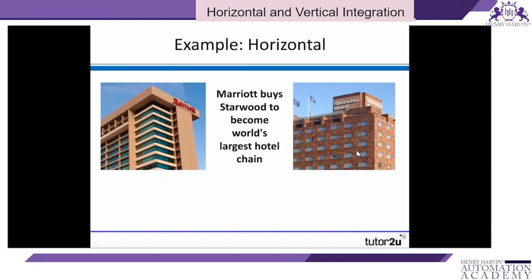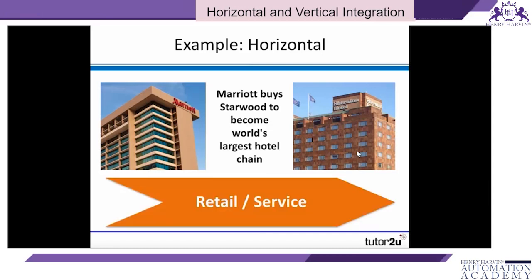Finally, here's an example of horizontal integration. Marriott, one of the world's largest hotel businesses, bought Starwood Hotels — which includes brands such as Sheraton Hotels. As a result of that takeover, finally approved in 2016, Marriott became the world's largest hotel chain — a classic example of horizontal integration where a service business buys a very close competitor.